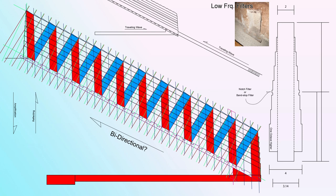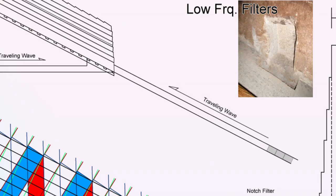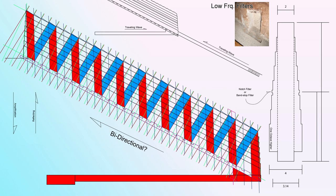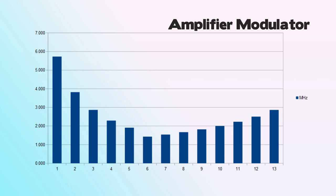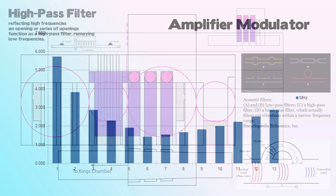A possible source for these waves would be the ascending passageway, which acts like a speaker projecting a specific wave into the Grand Gallery. That wave also travels down to the Queen's Chamber in a specific waveform — this is how energy moves through the Great Pyramid. Here's a graph showing the frequency relationship between the Queen's Chamber niche and the Grand Gallery steps, plotted in megahertz, showing how they create a relationship with each other.